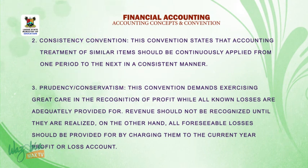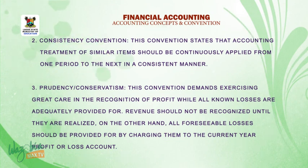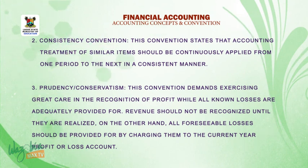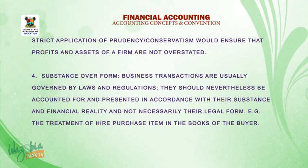Number three, prudence or conservatism. This convention demands exercising great care in the recognition of profit while all known losses are adequately provided for. Revenues should not be recognized until they are realized. On the other hand, all foreseeable losses should be provided for by charging them to the current year profit or loss account. A strict application of prudence or conservatism will ensure that profits and assets of the firm are not overstated.